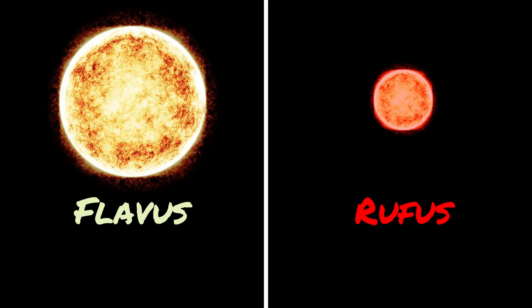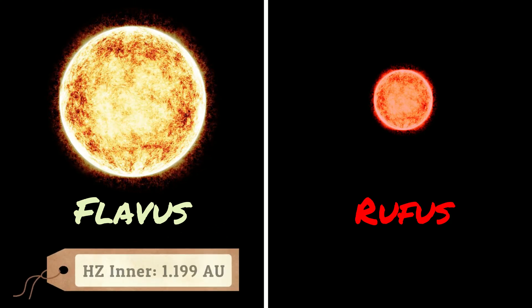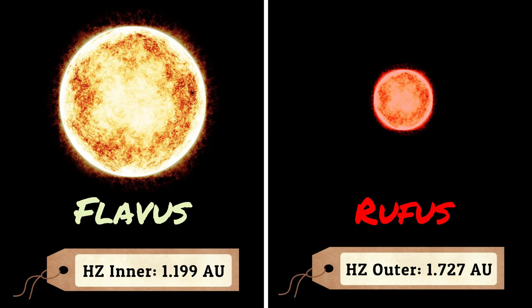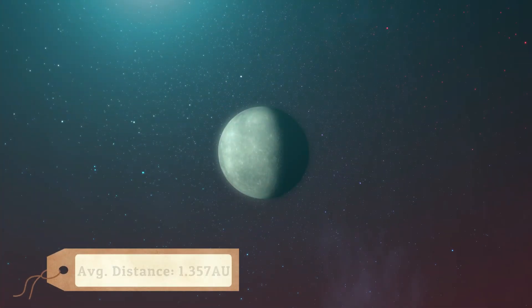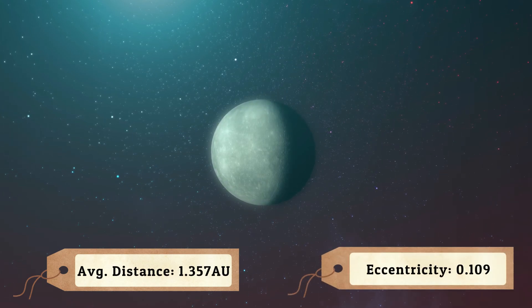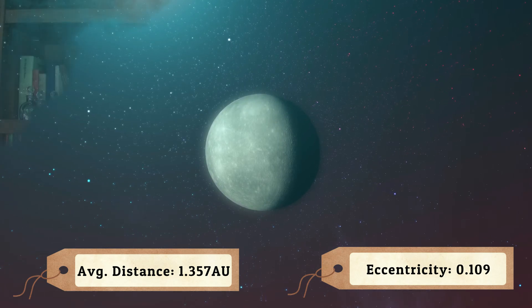In our last episode, where we built Flavus and Rufus, our two stars, we established that the habitable zone of the solar system is between 1.199 AU and 1.727 AU. Locusts is going to have to settle within this habitable zone to sustain life as we know it. Let's have Locusts settle in at an average distance of 1.357 AU, with an eccentricity of 0.109. I haven't just pulled this eccentricity number from nowhere, but I'll explain more on that in just a little bit.